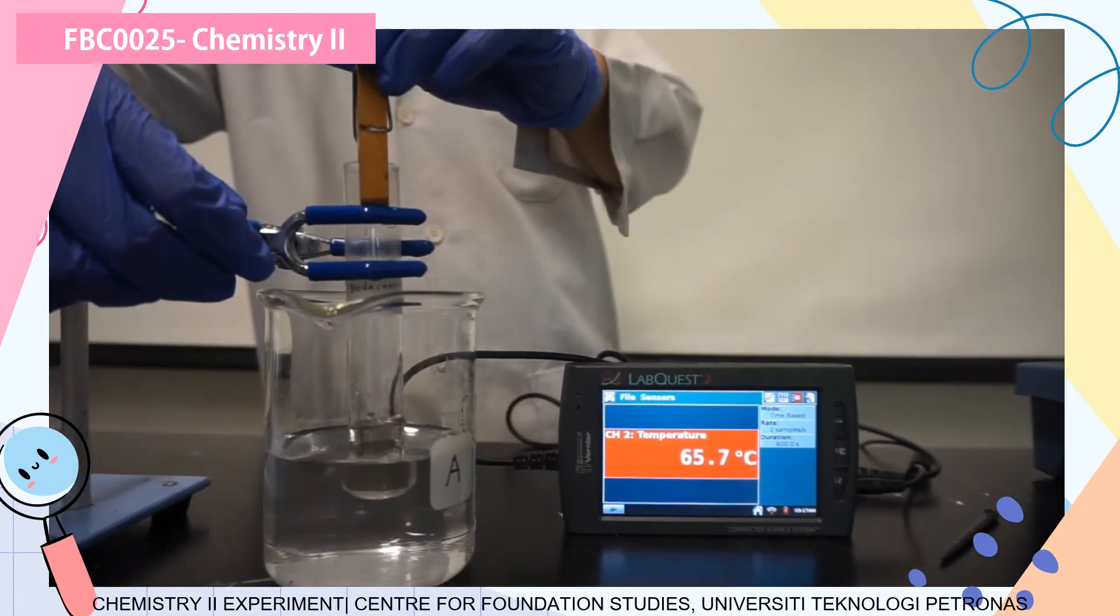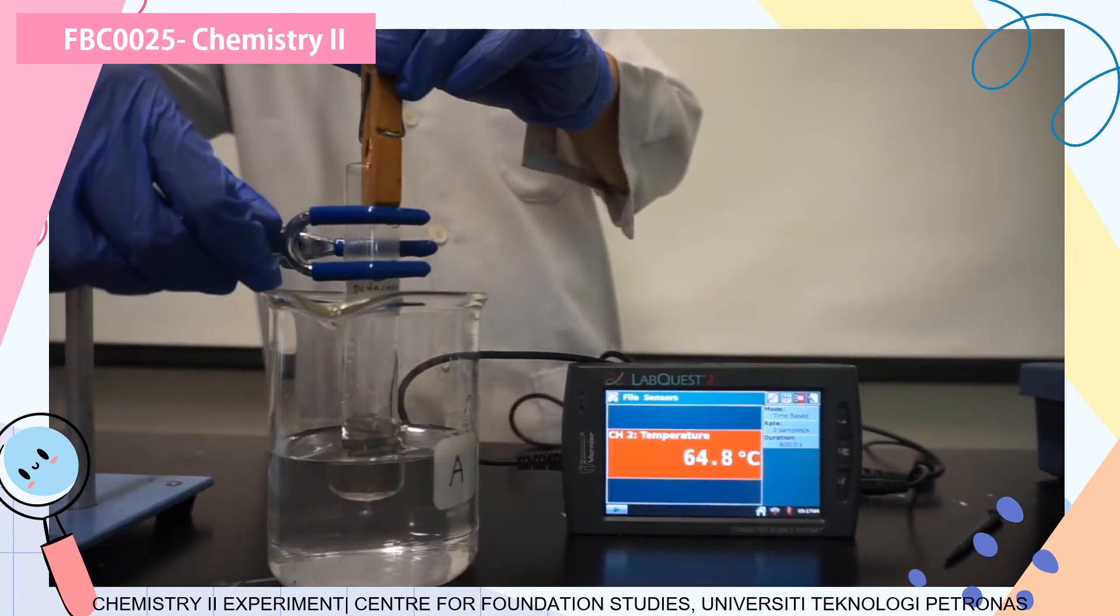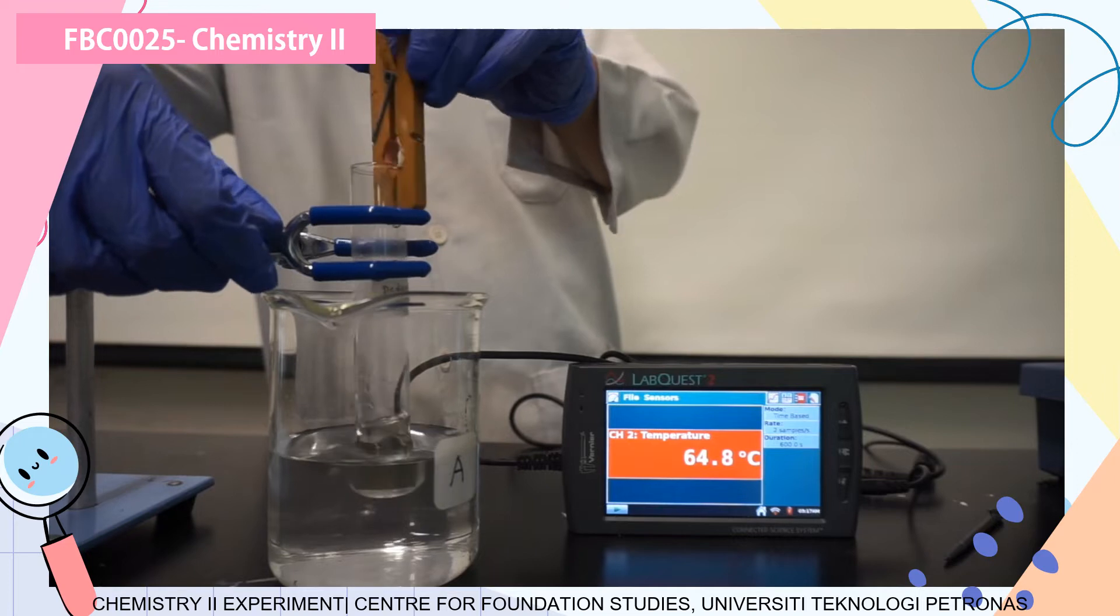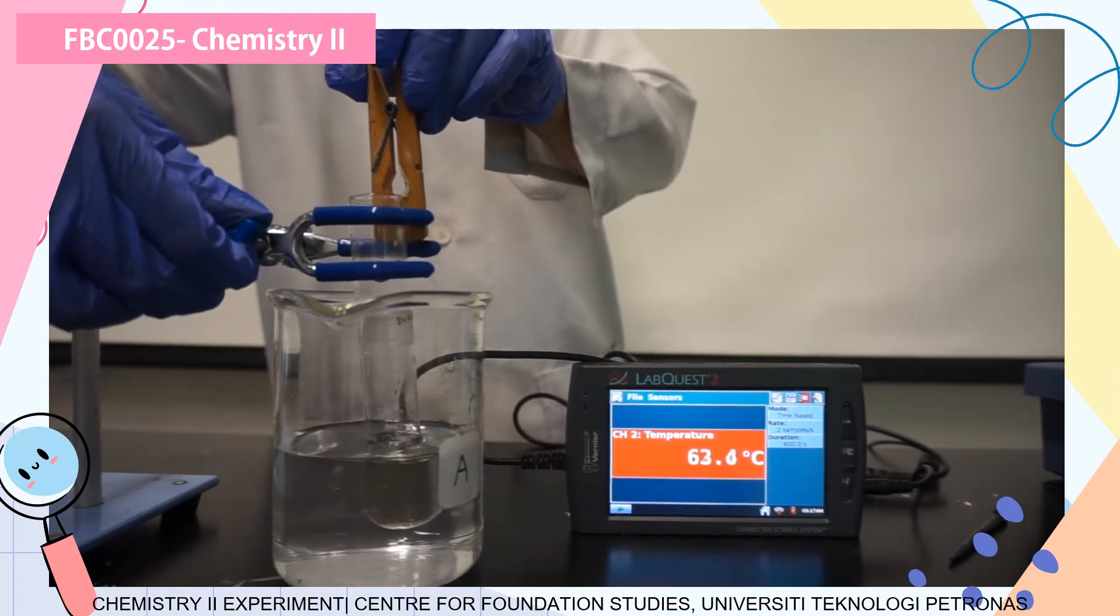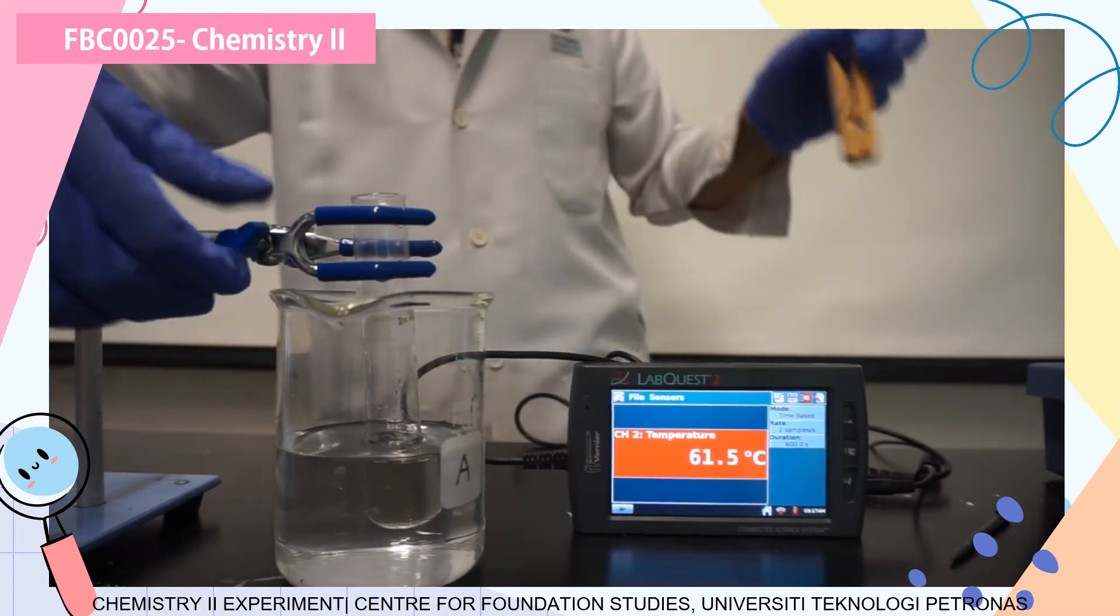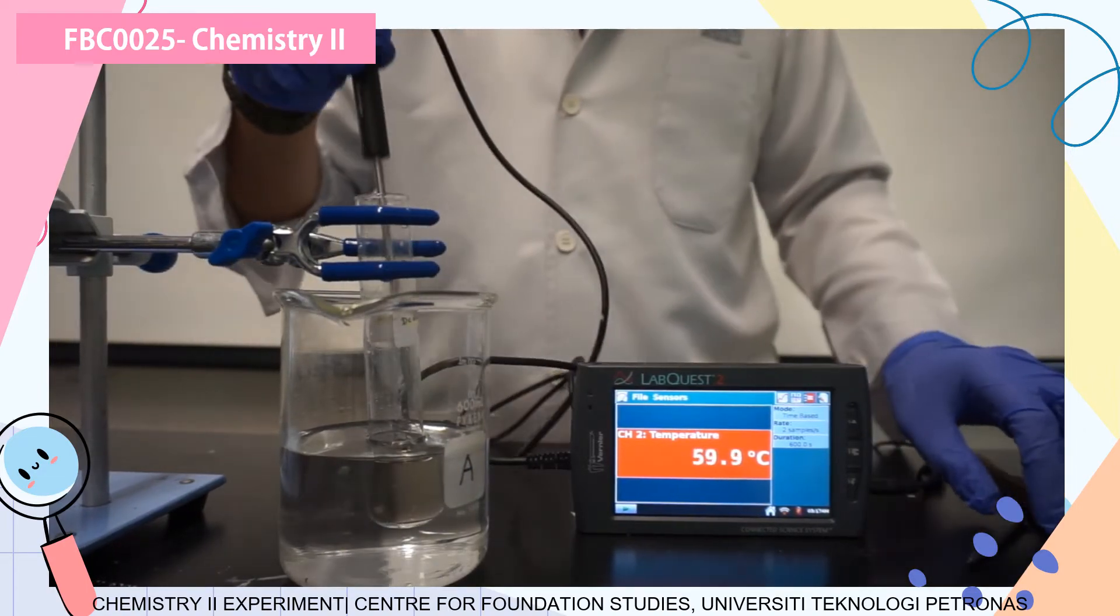Then you are going to transfer this lauric acid into a boiling tube. This is a boiling tube. Can you see that it is in liquid form? Just now when you weighed it, it was in powder form. Actually, because you are heating it up in the hot water bath first. We are going to transfer it into this beaker and make sure the level of the lauric acid is lower than the water bath level there.